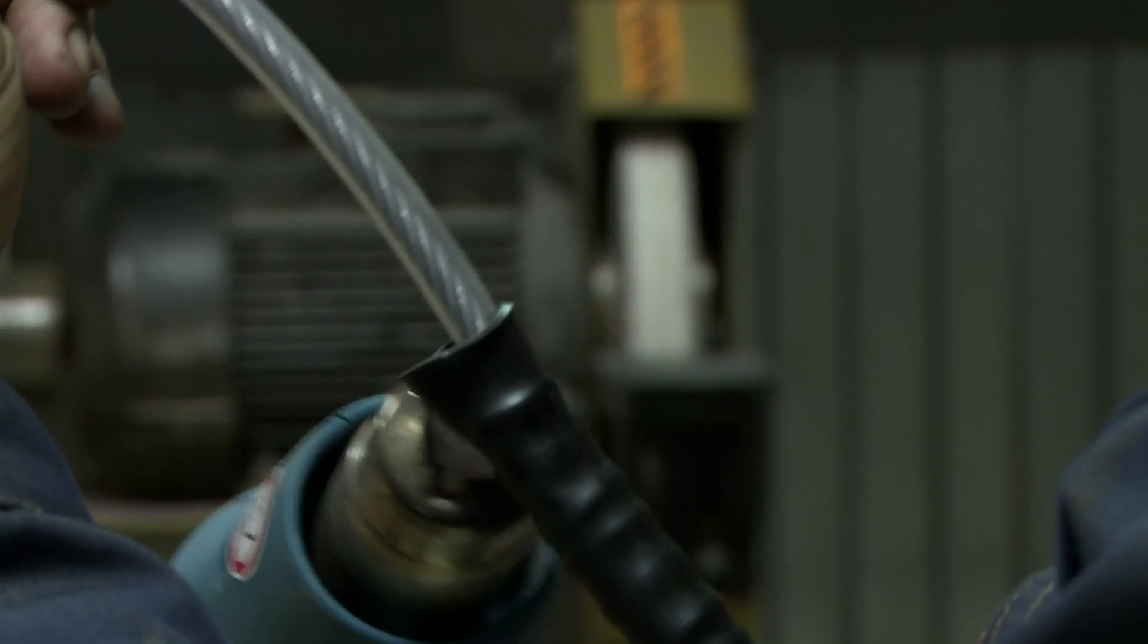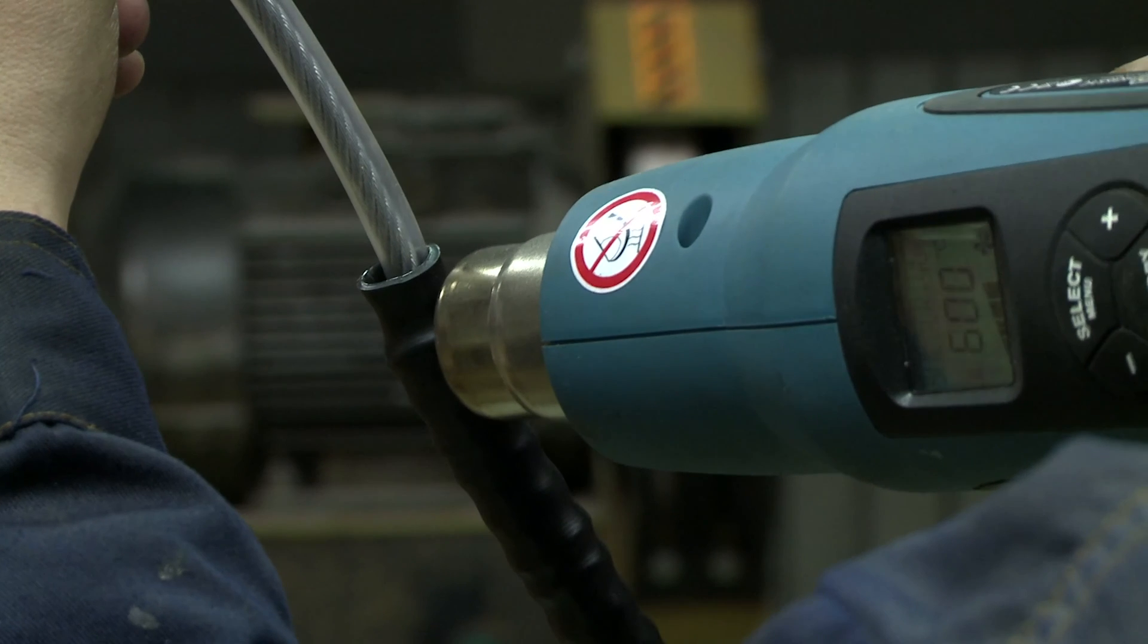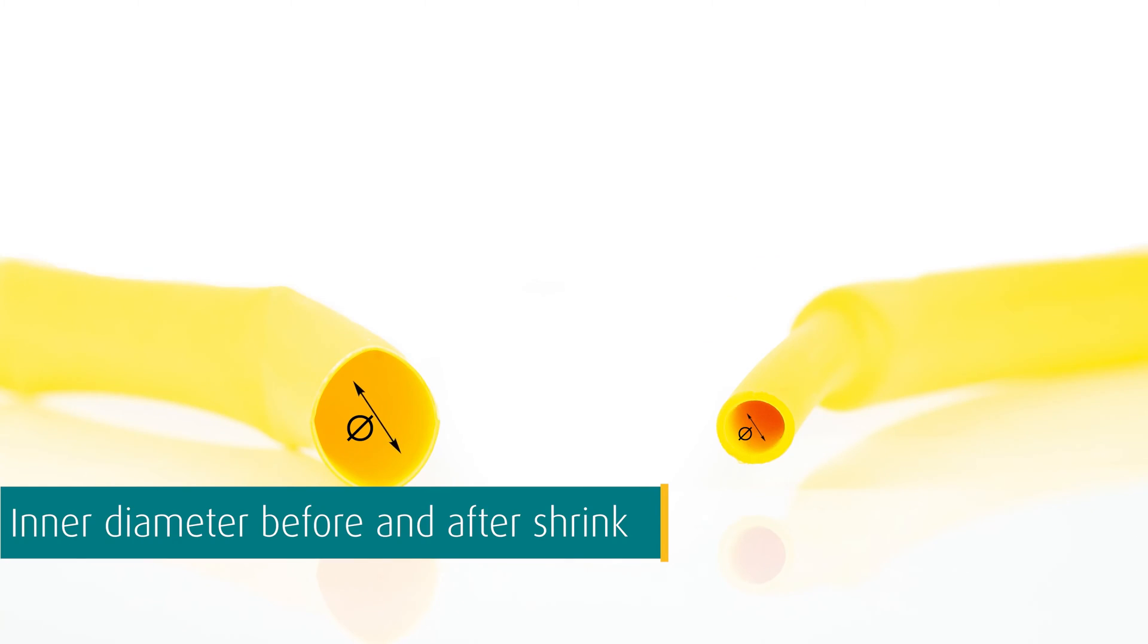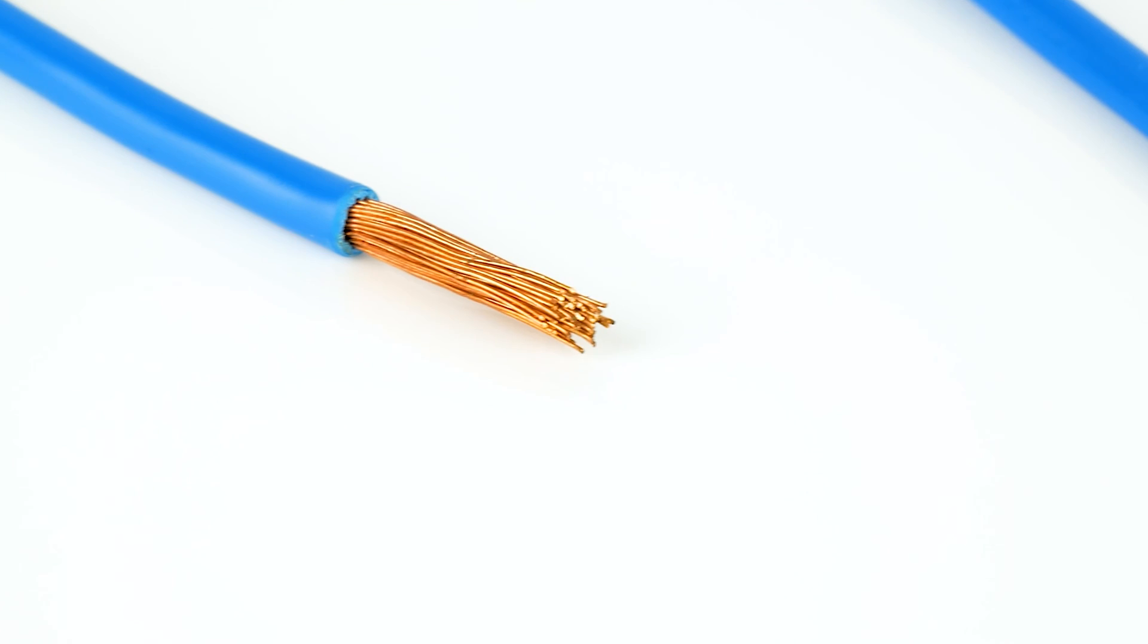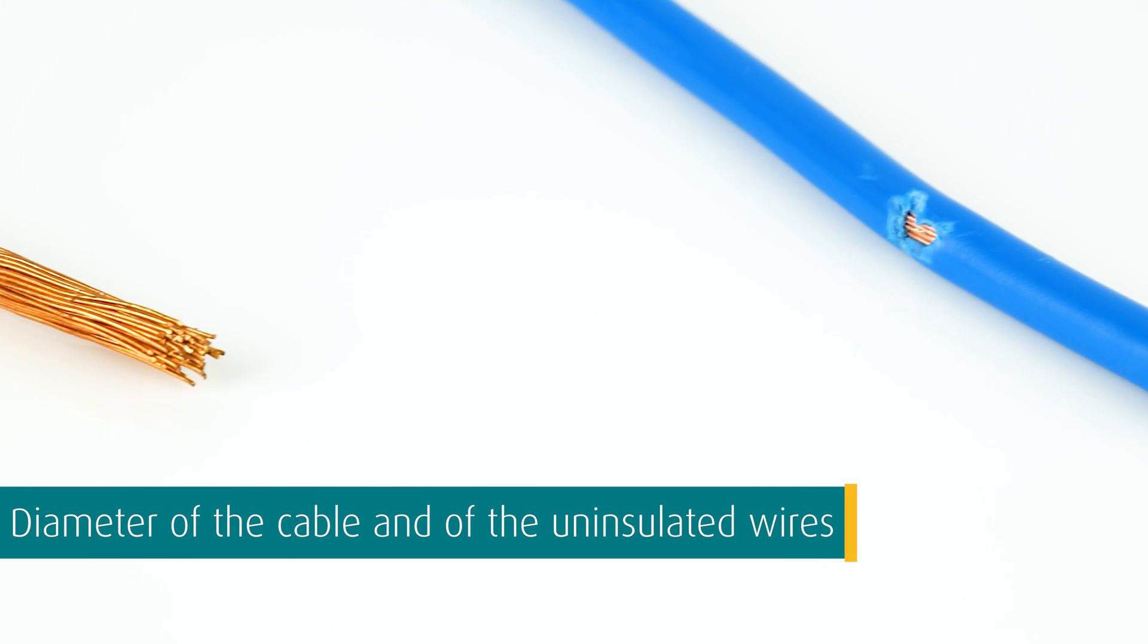Applying a heat shrink tube is simple. Choose the correct inner diameter and shrink ratio. Consider the inner diameter before and after shrink. Also consider the diameter of the cable inclusive its cable sheath and the diameter of the uninsulated wires.